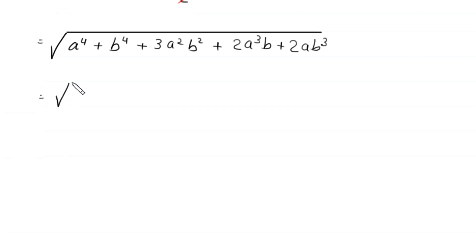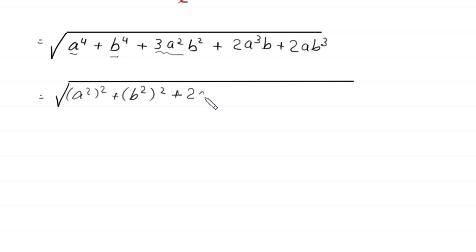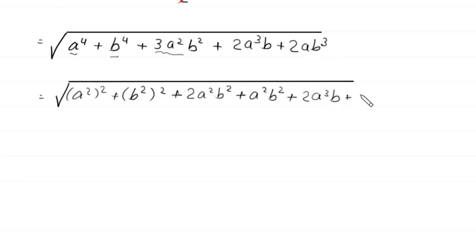Next, square root of: a to the power 4 can be written as a squared whole squared, and b to the power 4 can be written as b squared whole squared. We write this 3a squared b squared as 2a squared b squared plus a squared b squared, plus 2a cubed b plus 2ab cubed.